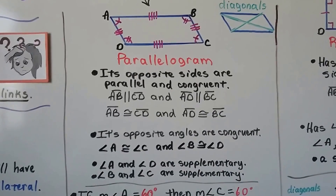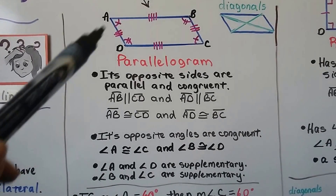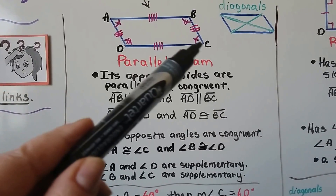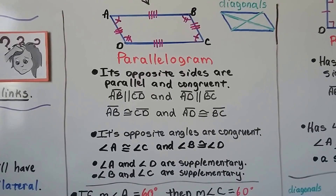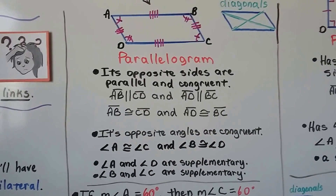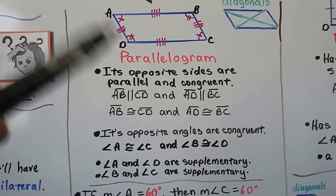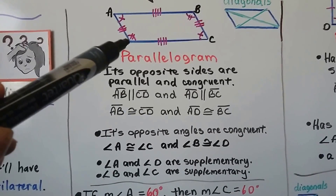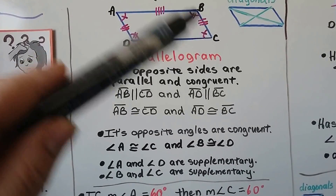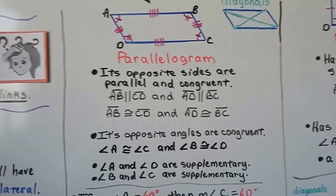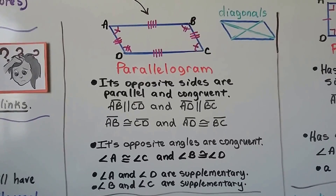Its opposite angles are congruent. So A is congruent to C, and B is congruent to D. They're also supplementary. A and D are supplementary — they total 180 degrees when added together. And B and C will total 180 degrees when added together.